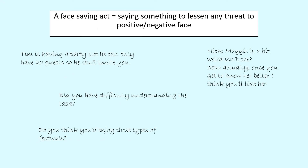Moving on to face-saving acts — saying something to lessen any threat to someone's positive or negative face. The first example changes to: 'Tim is having a party but he can only invite 20 guests so he can't invite you.' This now gives a reason behind the exclusion and won't leave the listener feeling they aren't liked. Example two: Nick still says 'Maggie is a bit weird, isn't she?' but Dan responds 'Actually, once you get to know her better I think you'll like her' — a face-saving act allowing Nick to change his view over time.